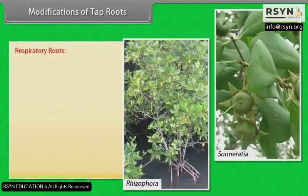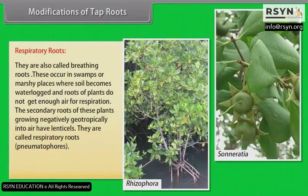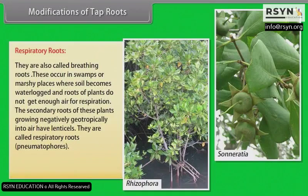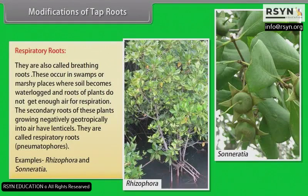Respiratory roots: They are also called breathing roots or pneumatophores. These occur in swamps or marshy places where soil becomes waterlogged and roots of plants do not get enough air for respiration. The secondary roots of these plants grow negatively geotropically into air and have lenticels. Examples: Rhizophora and Sonneratia.